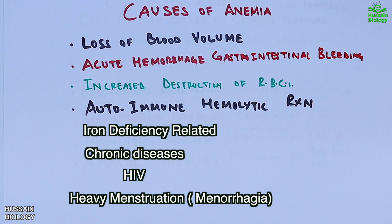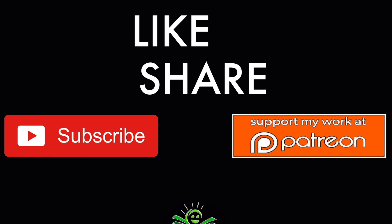This concludes the overview of anemia — its classification, causes, and types.